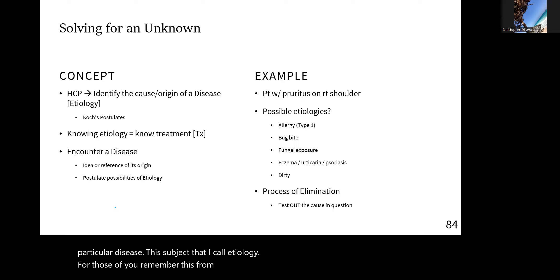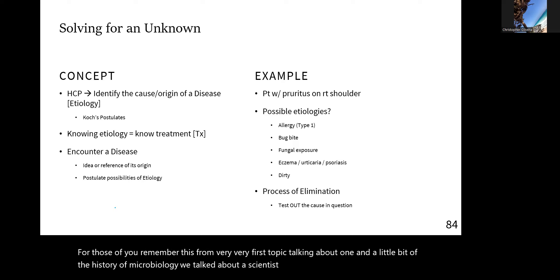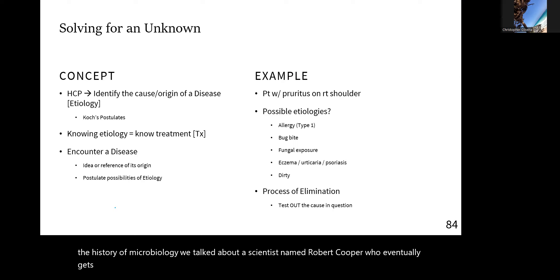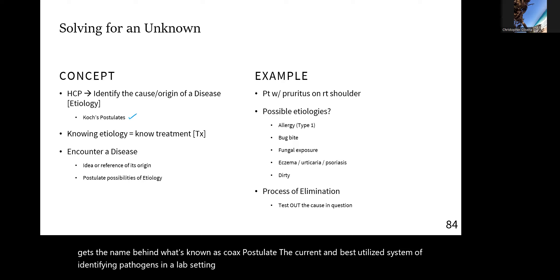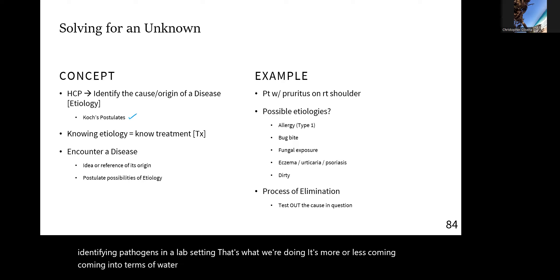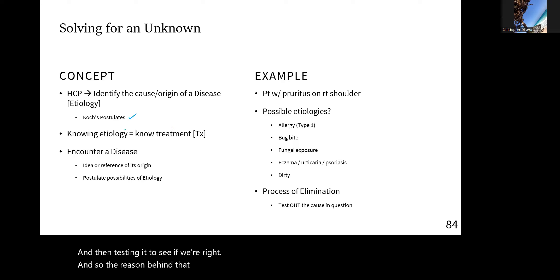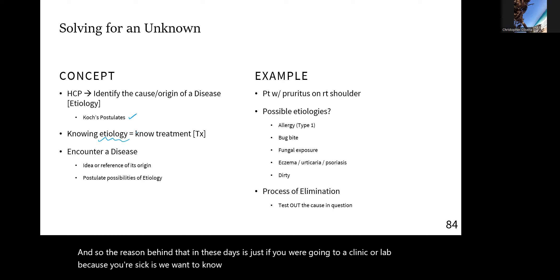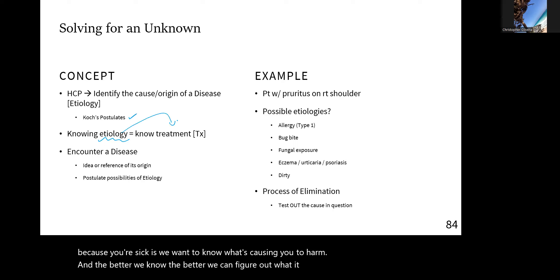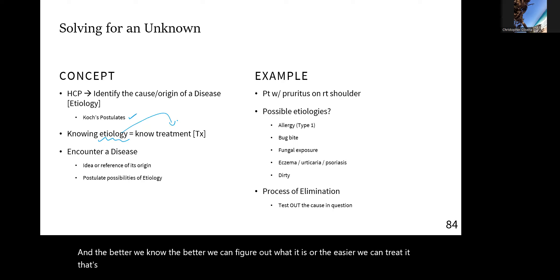For those who remember from Topic 1 and the history of microbiology, we talked about a scientist named Robert Koch, who gives his name to Koch's Postulates — the current and best-utilized system of identifying pathogens in a lab setting. That's what we're doing: coming to terms with what a disease is, what could be causing it, and testing to see if we're right. Just like if you were going to a clinic because you're sick, we want to know what's causing the harm — the better we know, the easier we can treat it.